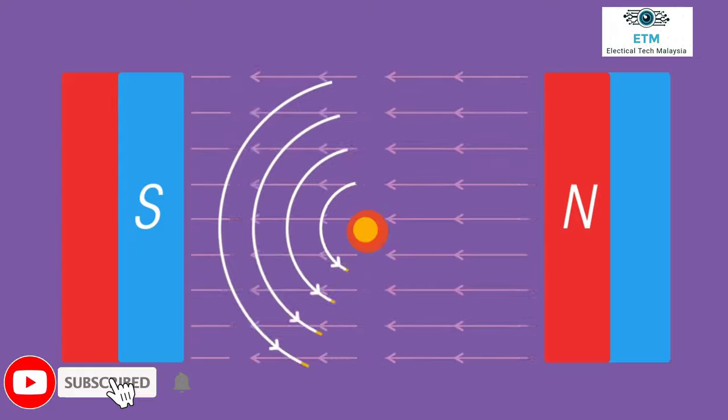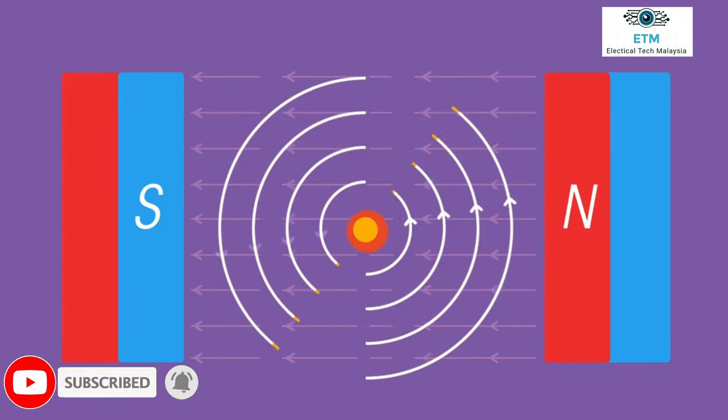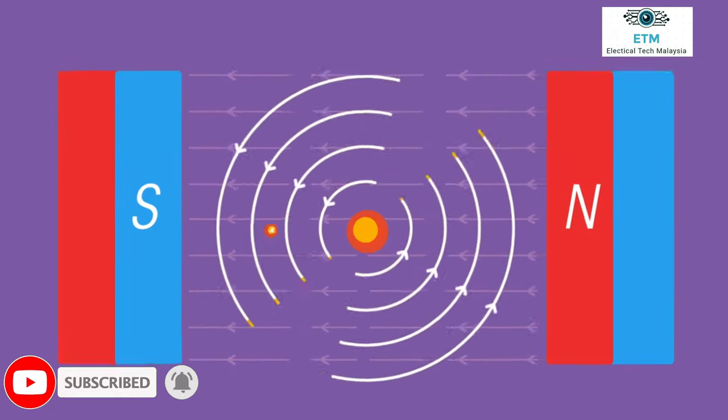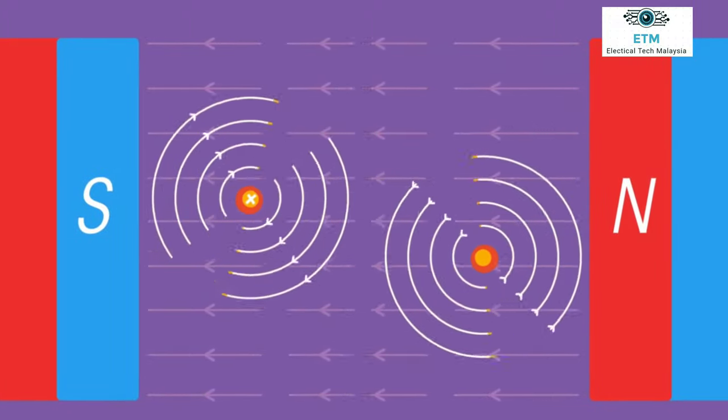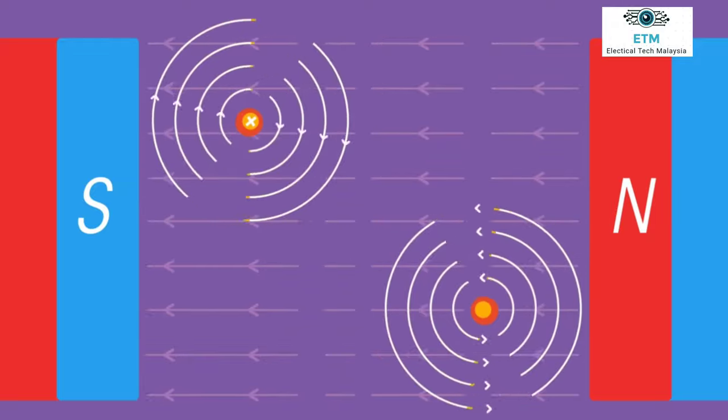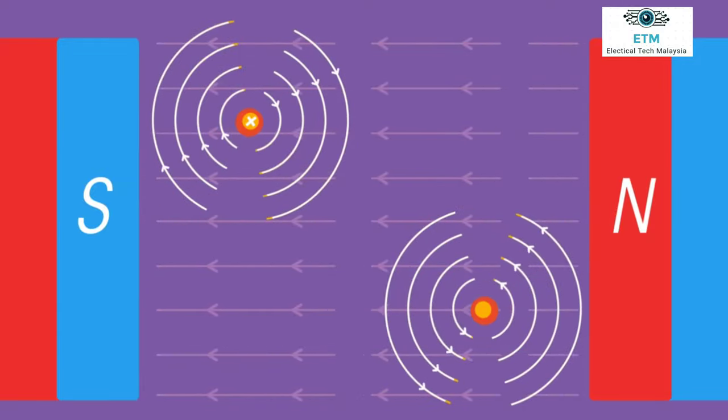Now, reverse the current. This experiences a force in the opposite direction. Now, place both wires in the same field. One wire will be pushed up, the other down. But we don't have circular motion yet.